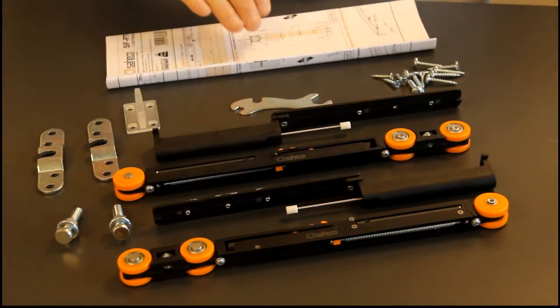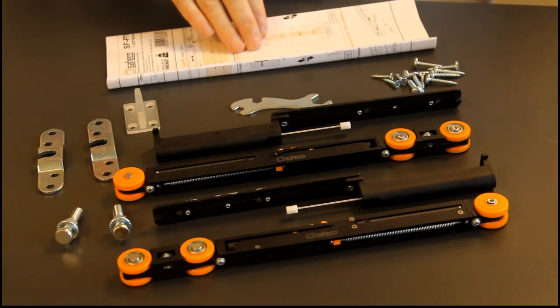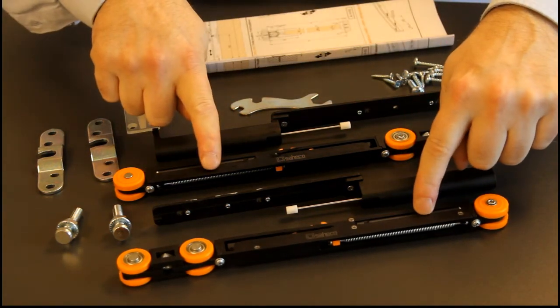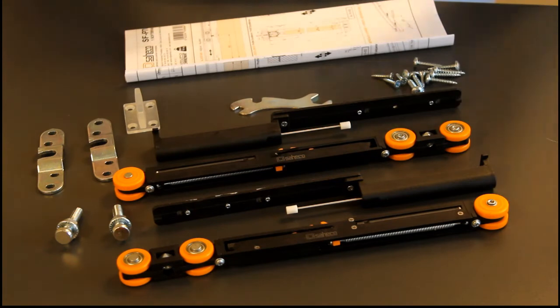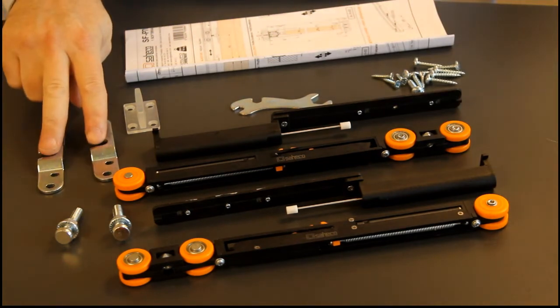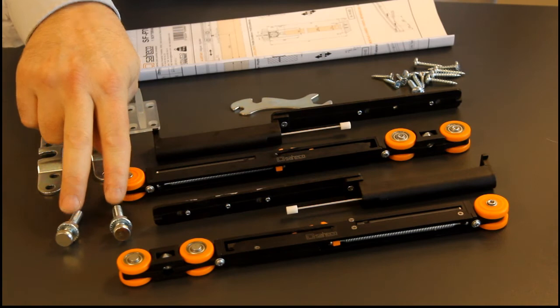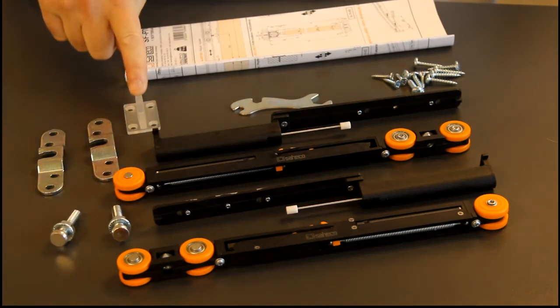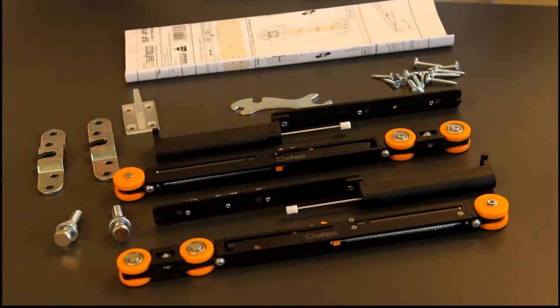Double door packs also come with a set of fitting instructions, two single soft closed door carriages, two door brackets, two support screws for the carriages and one standard fixed floor guide and the track.